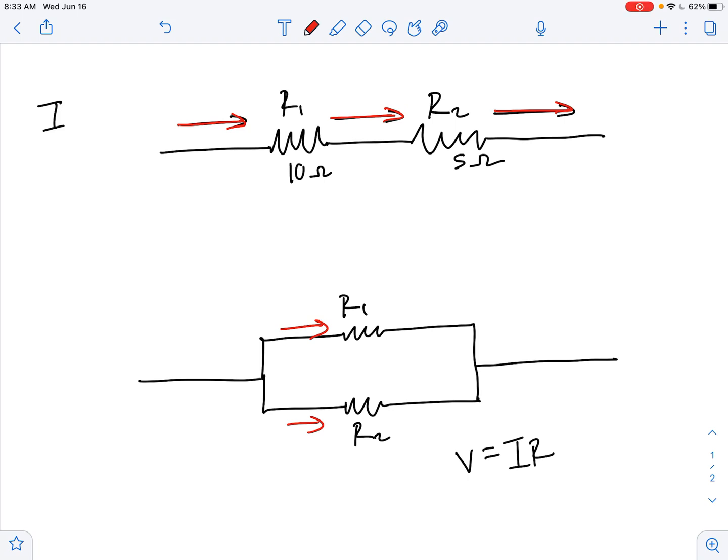Whenever you're confused, just think about this equation: V equals IR. Like I just explained, the current has no choice other than to go down this path.